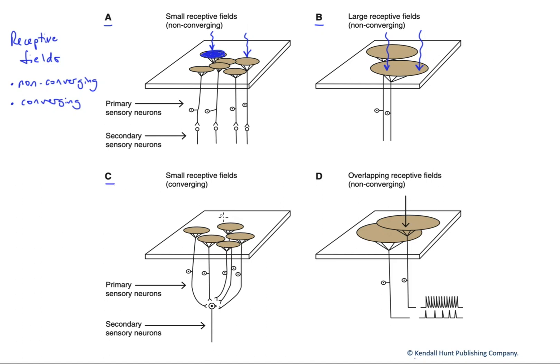Now, in C down here, we have small receptive fields again, but in this case, they're converging. They're coming together on a single secondary neuron. What this means is that a stimulus that arrives over here and a stimulus that arrives over here will not be distinguished as separate stimuli because they're funneling together onto the single neuron here. This is very common in the peripheral retina of the eye on photoreceptor cells known as rods.